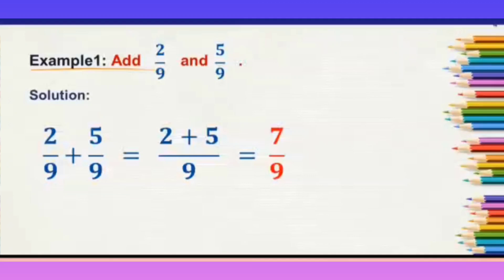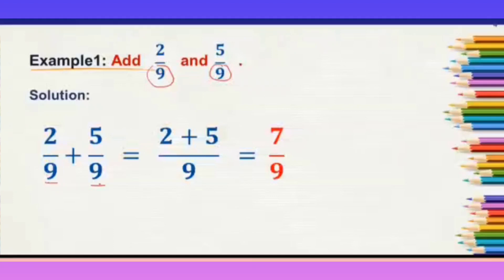The denominator remains the same, that is 9. Whenever you are adding like fractions, simply add the numerators and write the denominator below as it is, below the sum. It is a like fraction as the denominators are same, so you will only add the numerator: 2 plus 5 is 7, and 9 remains as it is. This is how we add when the denominators are same.